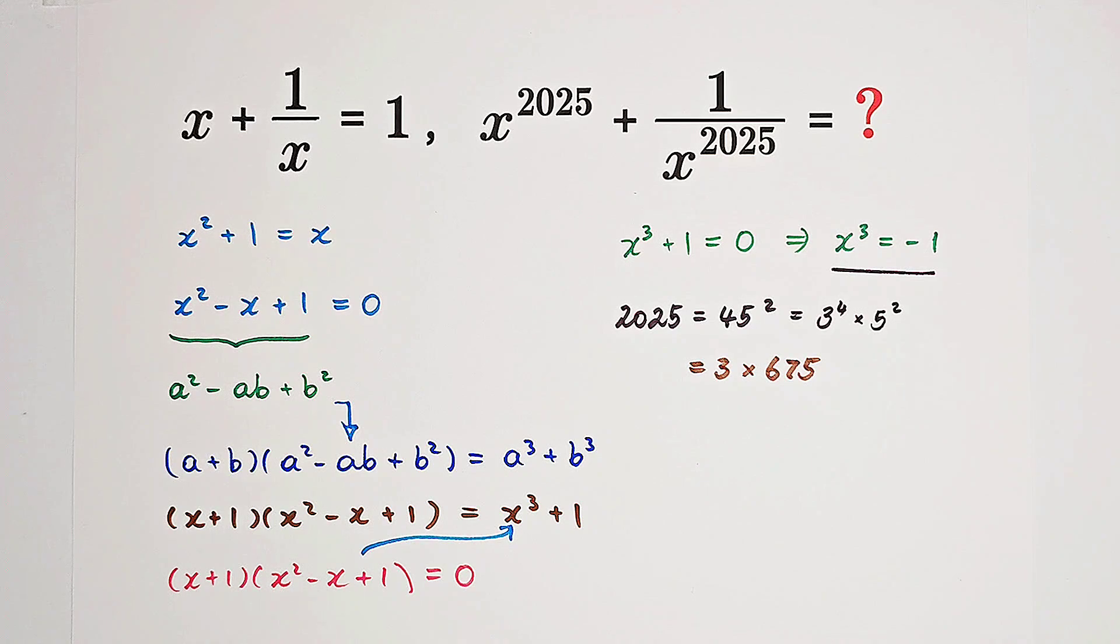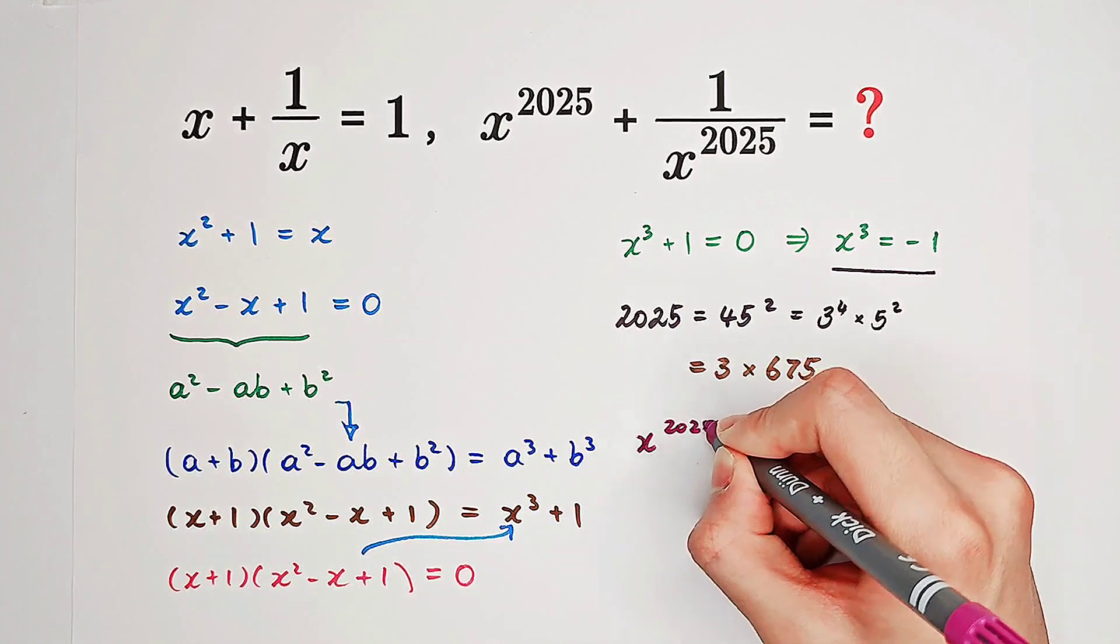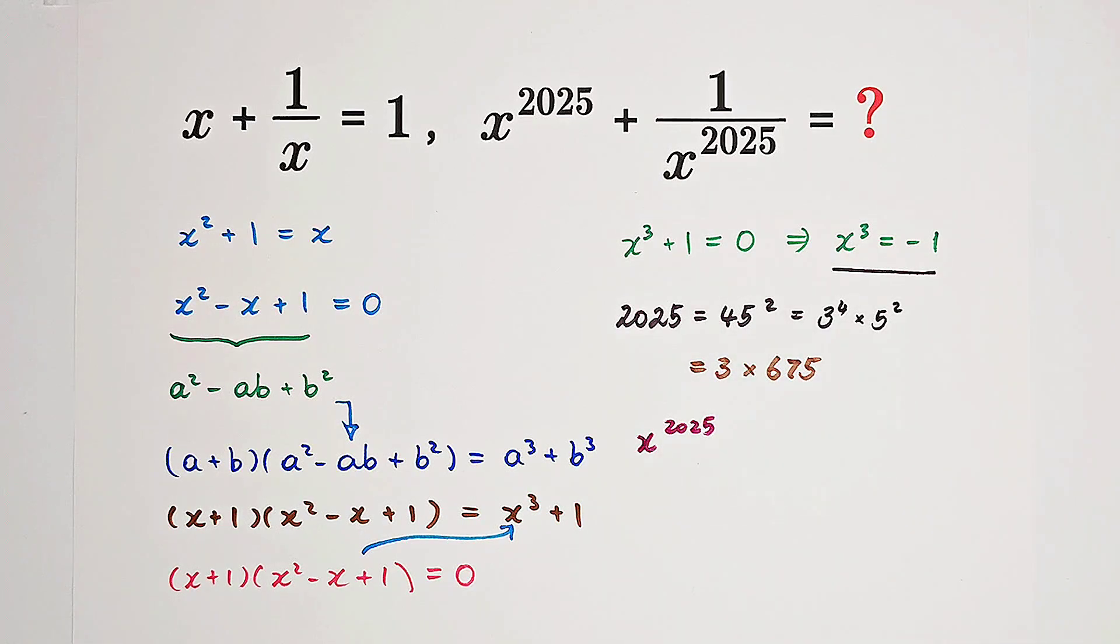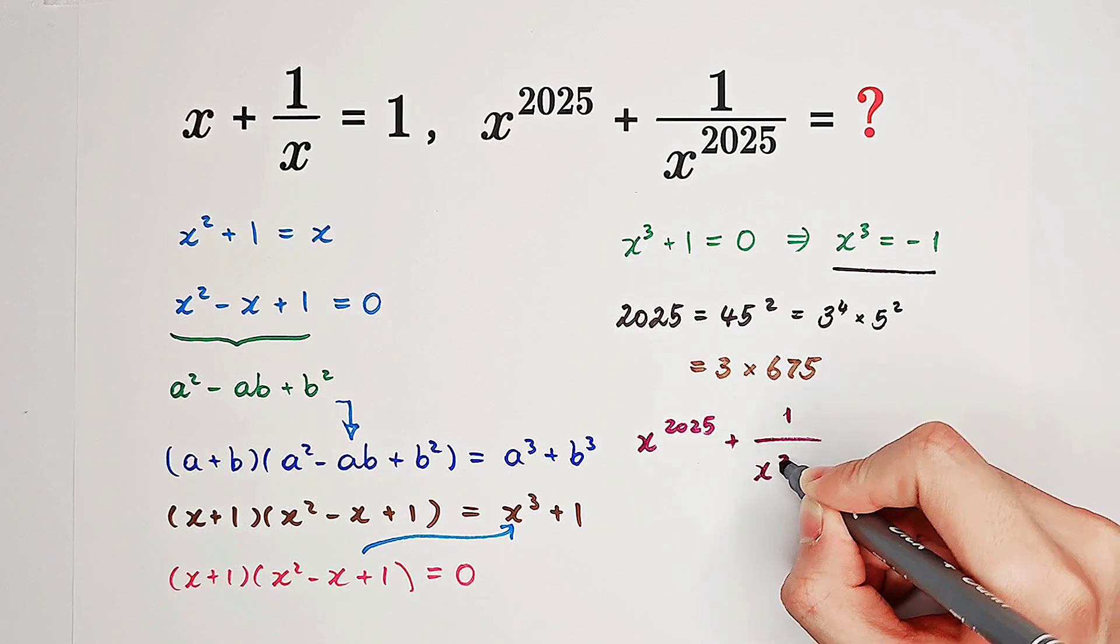And since we have this, we can say x to the power of 2025 plus 1 over x to the power of 2025.